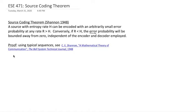Conversely, if r is less than h, the error probability will be bounded away from zero independent of the encoder and decoder employed.